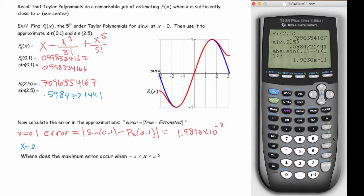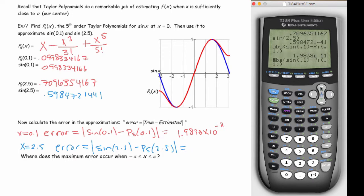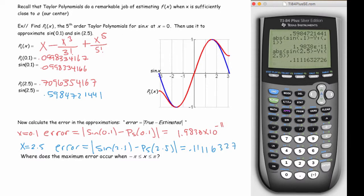And for x equal to 2.5, the error would be sine of 2.5 minus the polynomial evaluated at 2.5. And doing that gives you 0.111632726. So I guess still a pretty good job. I mean, it's within 2 tenths if you think about it. But definitely not as good a job as when we were approximating 0.1, the value at 0.1, which is close to zero.